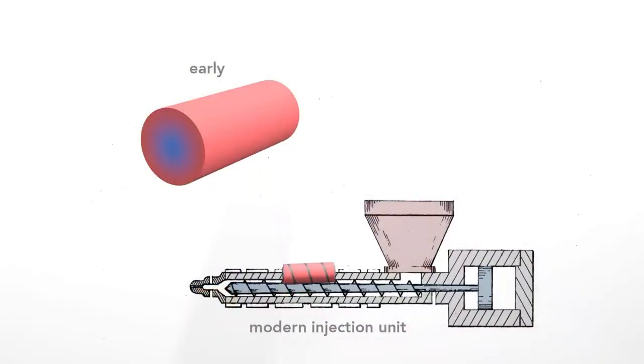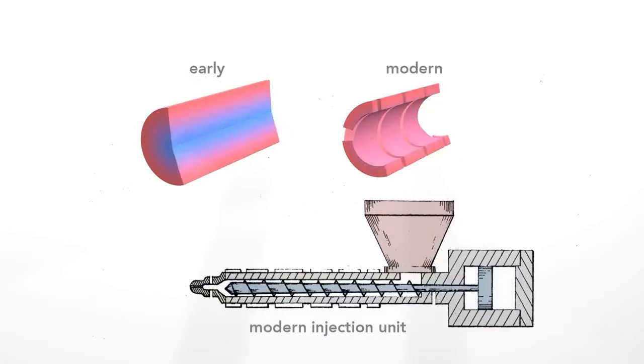First, in modern units, the plastic fills only the space around the shaft of the screw. This eliminates the cooler central region, leaving a thinner, evenly heated layer of plastic.